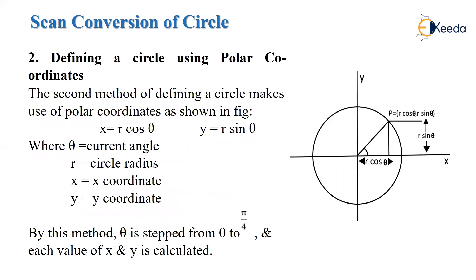Next is the scan conversion of a circle using the polar coordinate method. With polar coordinates, we can also draw the circle on screen. For any point on the circle with coordinates x and y, x = r·cos(θ) and y = r·sin(θ), where θ is the current angle and r is the radius. We use θ varying from 0 to π/4, calculate each value of x and y, and get the different points on the circle to draw it.